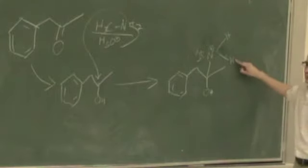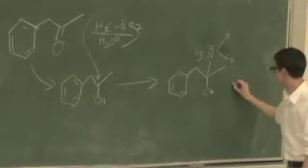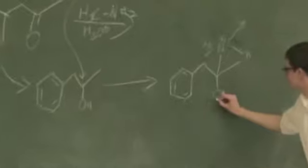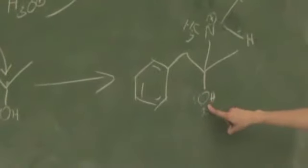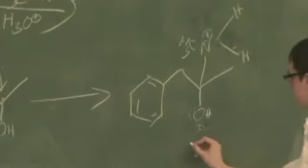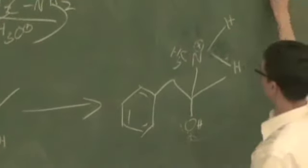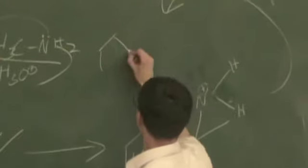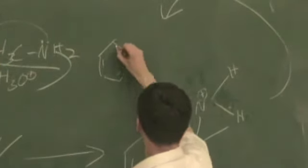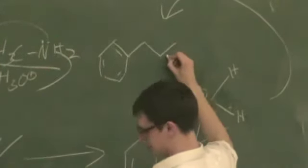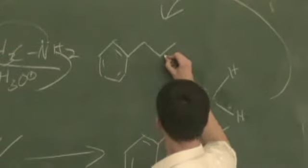So what happens next is this, we have a proton transfer. This H is going to go down to this oxygen. And then this will become a water, which is a good leaving group. And we will go back. And then we will be at our product, which is methamphetamine.